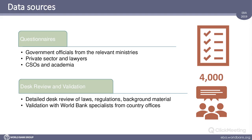Where do we get our data? We identify the data points we're looking for — most of which shape our indicators, but many go beyond the indicators. We put together questionnaires and administer them to the public sector in our target countries, to the private sector, law firms, CSOs, civil society, and academia — basically anybody who are primary actors in those sectors within a country. We have over 4,000 respondents to these questionnaires. The data goes through a process of review and validation before we code it and aggregate it into indicators.